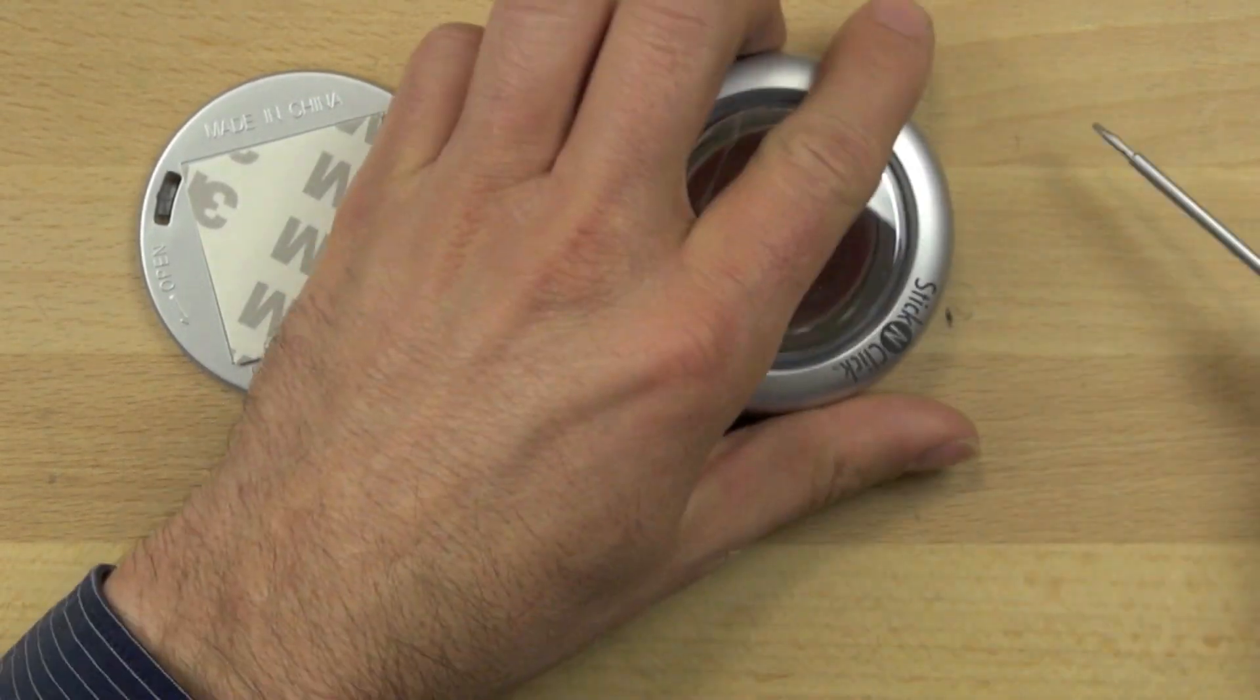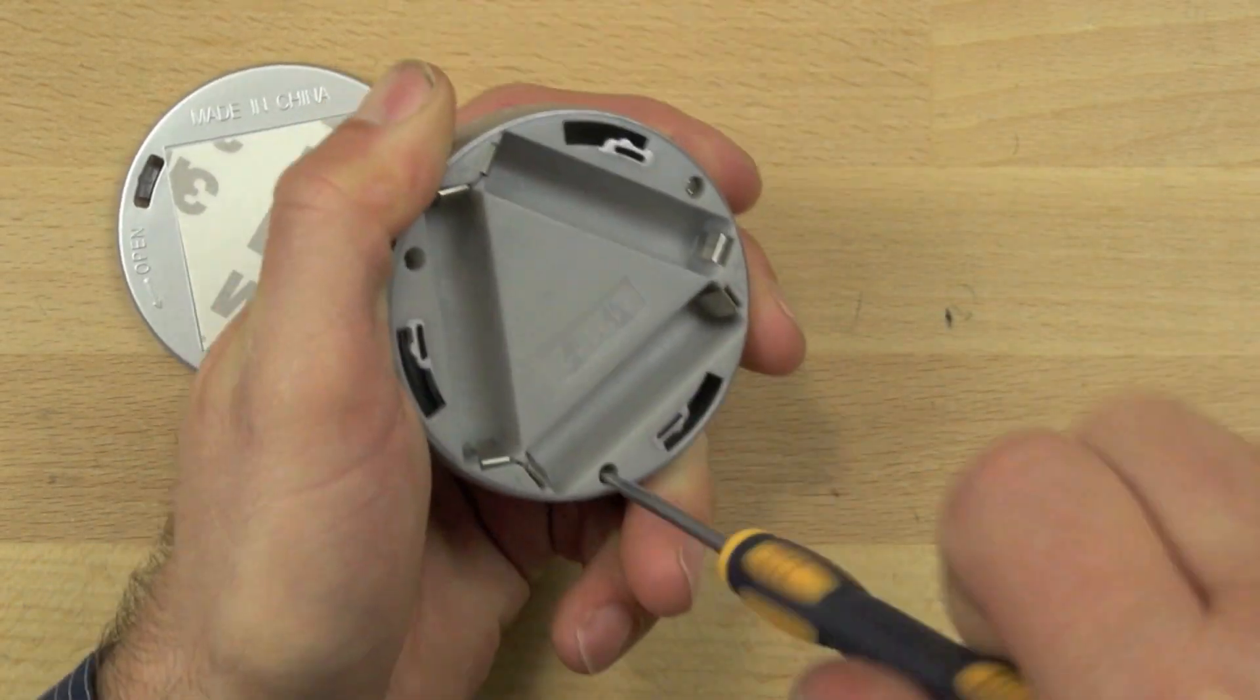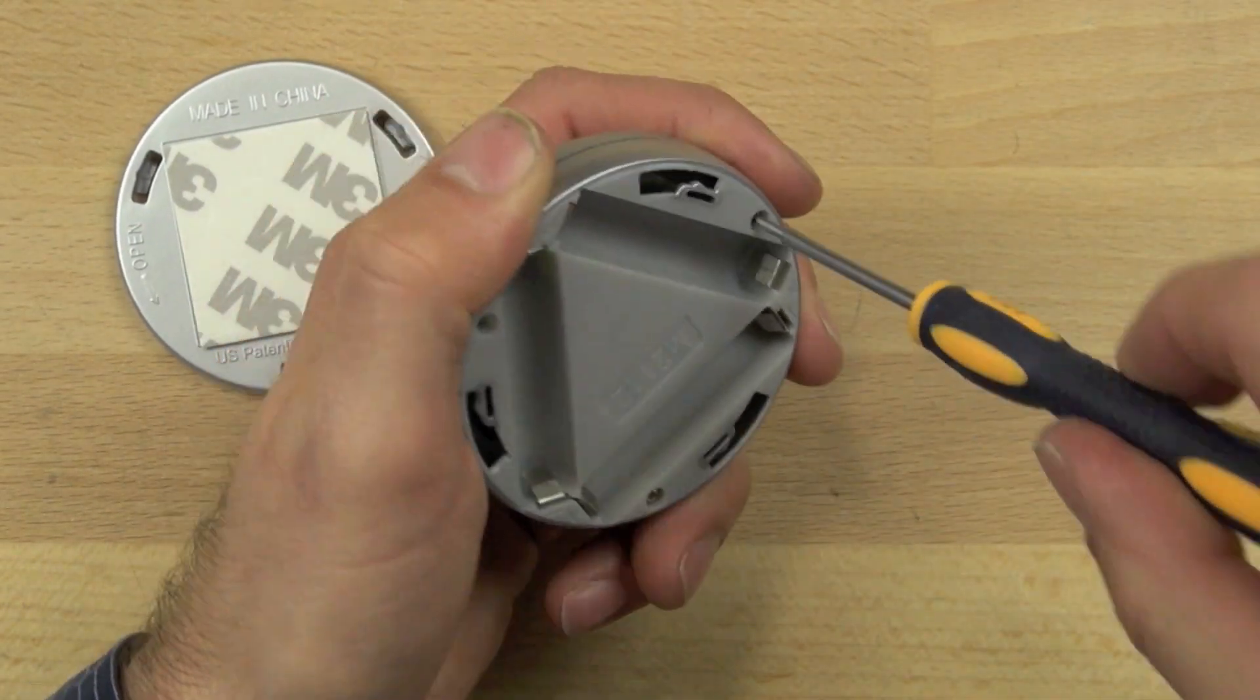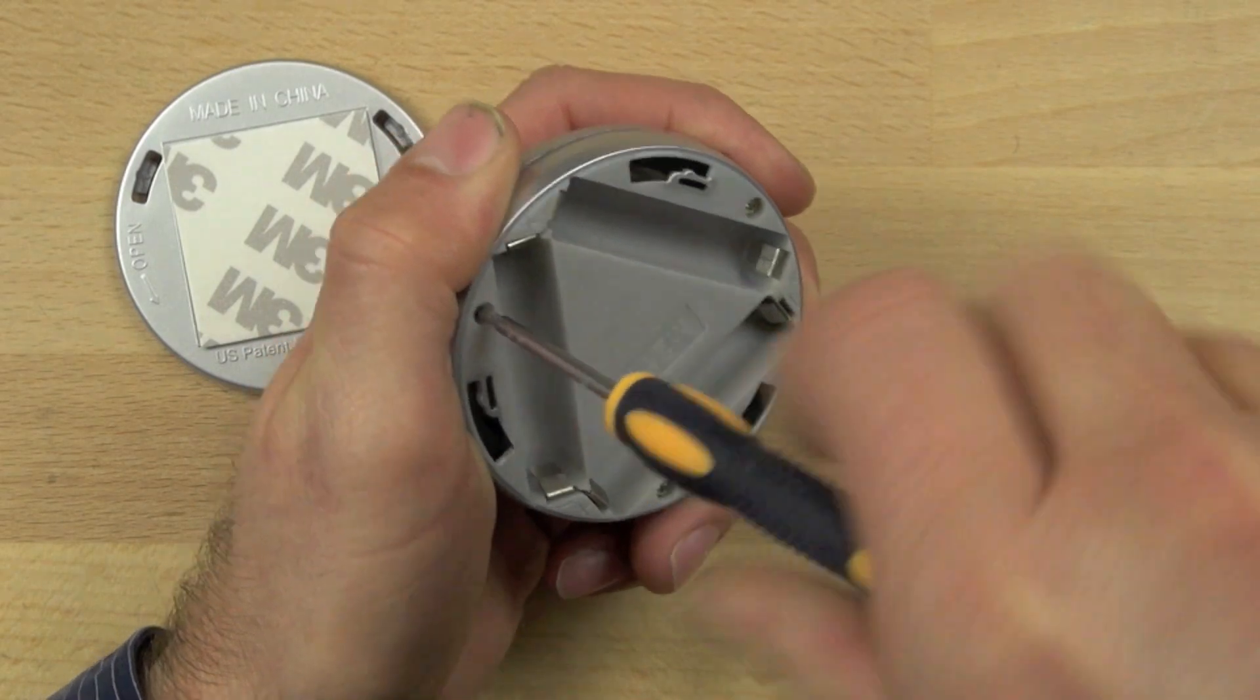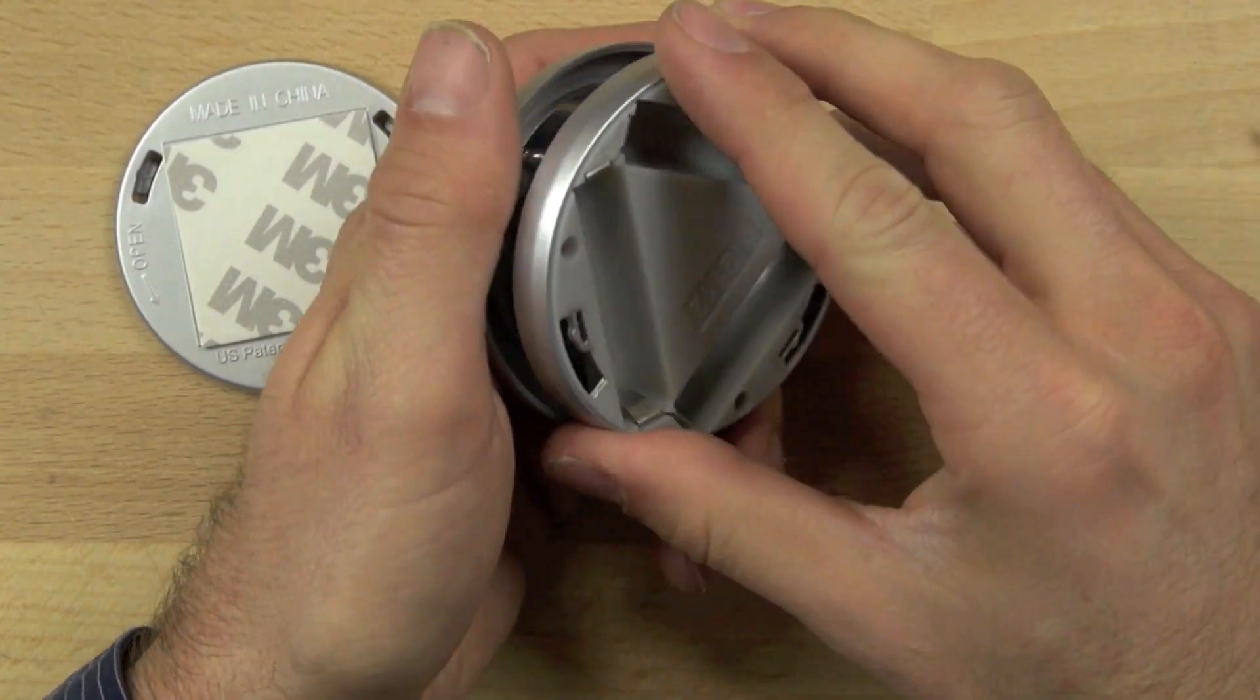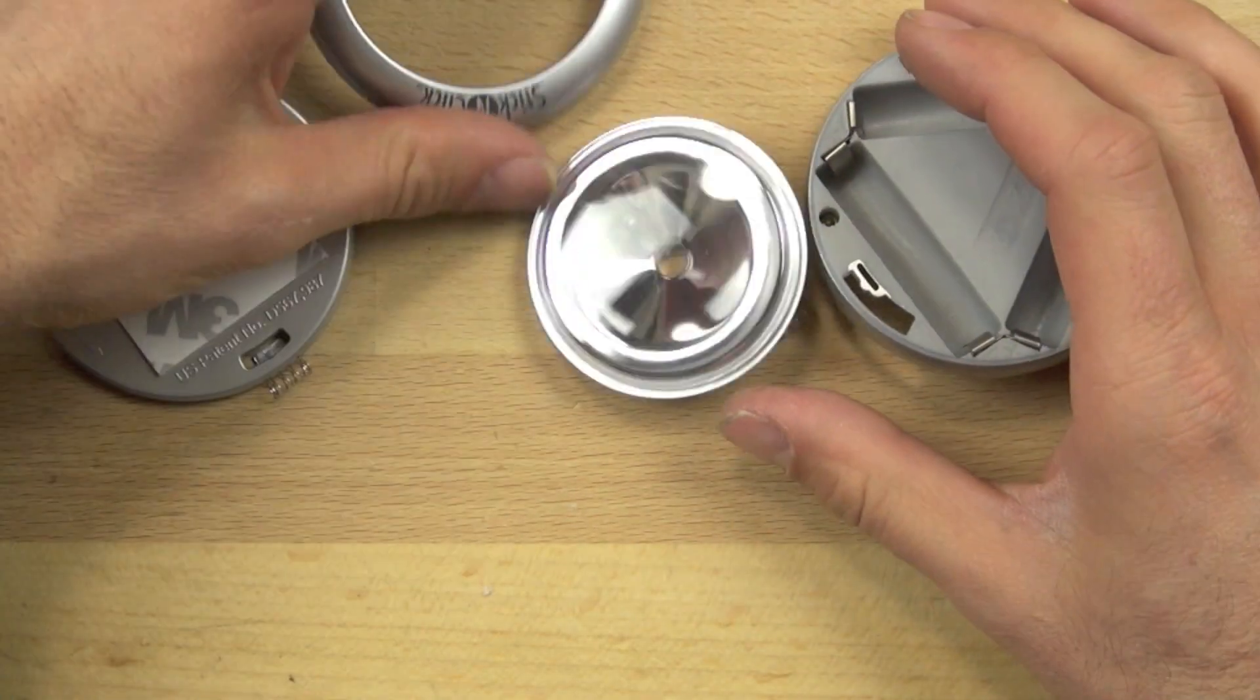So the first thing we need to do is take the screws out and we're just using a small precision or watchmaker screwdriver and you can use Phillips or a flathead there. And we're just going to take out the reflector and the lens.